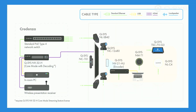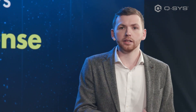Here we've got an NV32 as a decoder, and that makes sense because we've got multiple local sources for the decoder. We've got a display, we're doing bridging, we could have another display if we wanted to. We've got an NV21 at the table doing that single cable BYOD connection. This is the point where we would normally add something like a core nano, but we don't need to — we can simply add this license on.